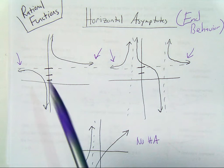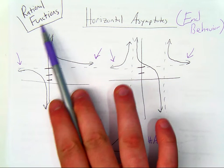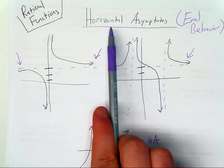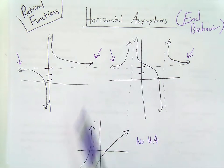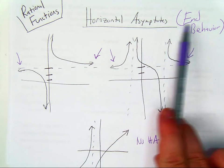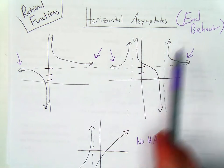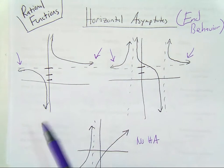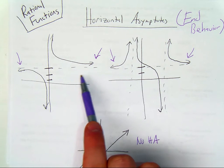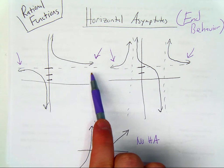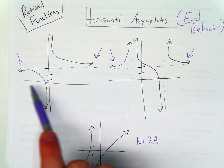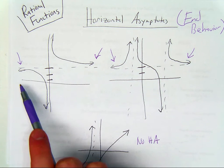In this video we're going to talk about rational functions and a feature called horizontal asymptotes. Horizontal asymptotes represent the end behavior of the function. End behavior is what happens to the y coordinate as x approaches infinity and as x approaches negative infinity.